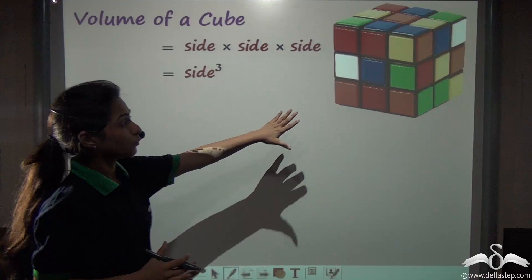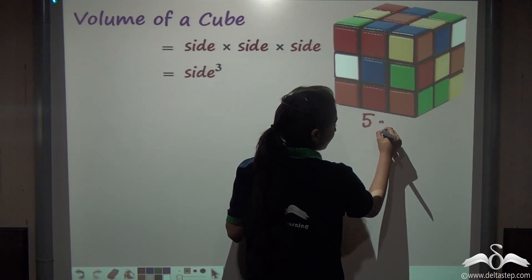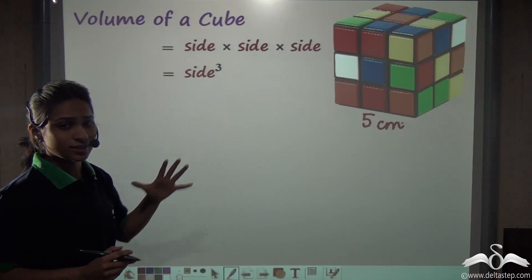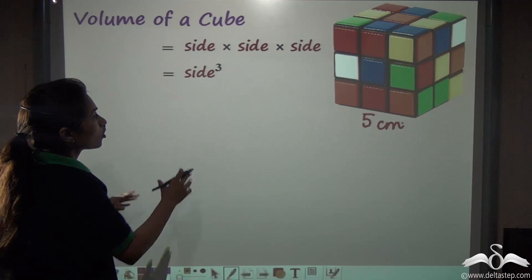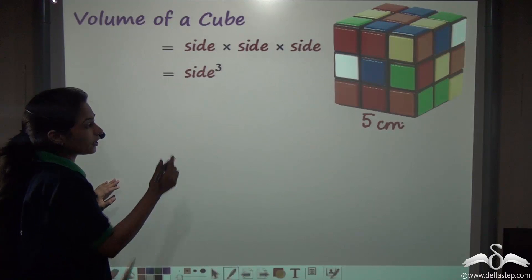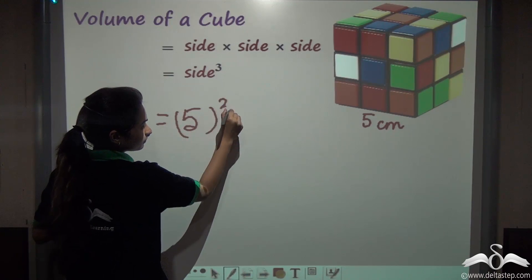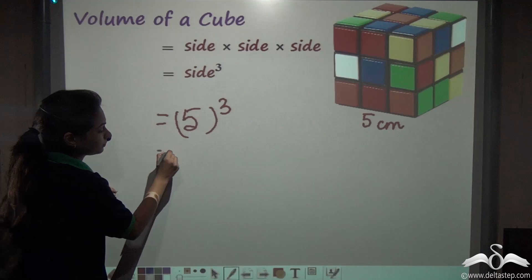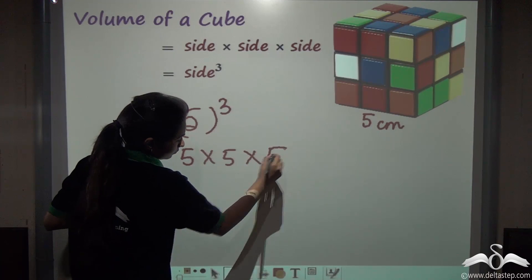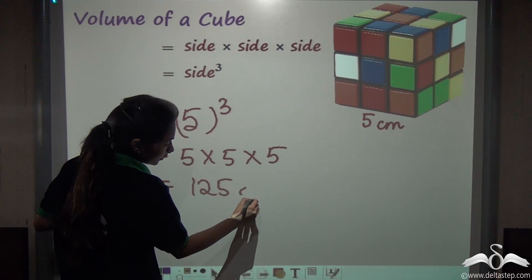Suppose one side of this Rubik's cube is 5 centimetres. If I ask you to find out the volume of this, it is very easy — just find out the cube of five and you will get the answer, that is 125 centimetre cube.